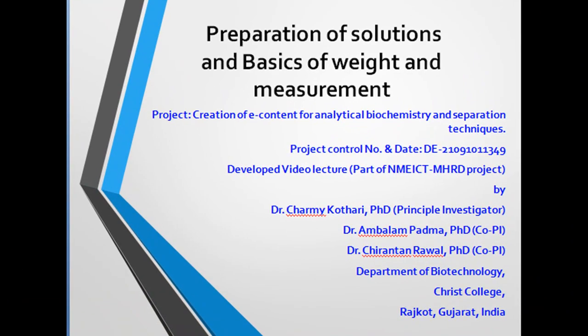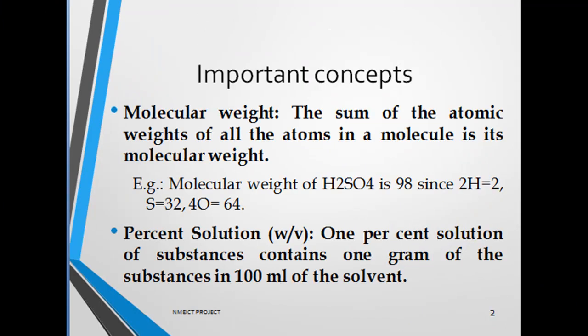Let's try to understand the important concepts. First, molecular weight. It is the sum of the atomic weights of all the atoms in a molecule. For example, molecular weight of H2SO4 is 98. Since it contains 2 hydrogen so that is 2, for sulfur it is 32, and for 4 oxygen it is 64. The sum total of all this is 98.